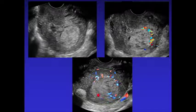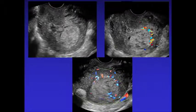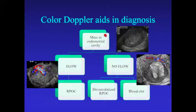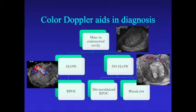Measurement is very important. At my institution, if it's less than four centimeters, they may try medical therapy to decrease the blood vessels and hope the patient passes it on her own. If it's four centimeters or greater, they'll definitely do a D&C. We look for a mass in the endometrial cavity: if there's flow, we know it's retained products; if there's no flow, it could be devascularized retained products or blood clot. Placental-type calcifications also confirm retained products.